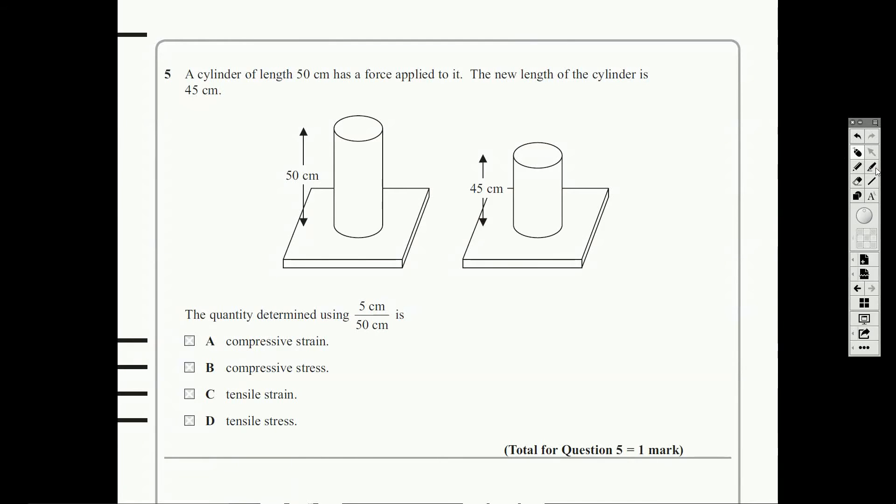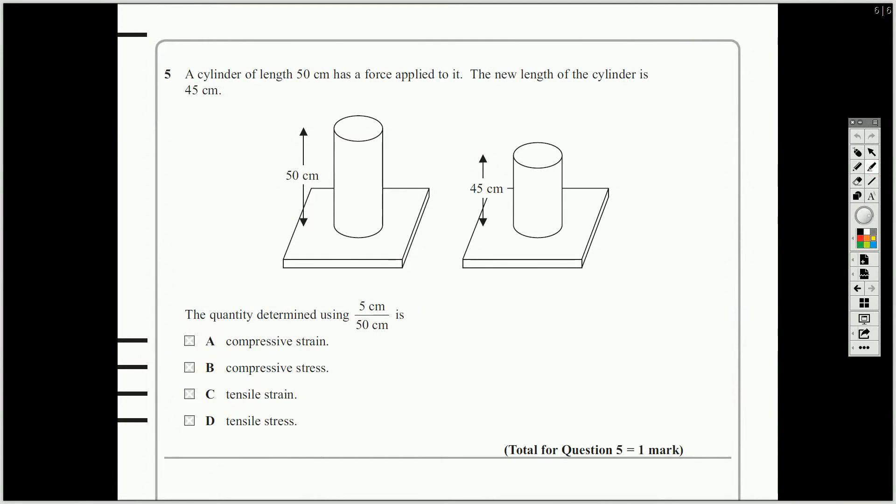So, this is a materials question. Straight away, you can see we're talking about a cylinder, so we've got a regular cross-section. See the original length, and you can see the new length. So, the change in length, delta X, is 5 centimetres. Okay, you can figure that out straight away.